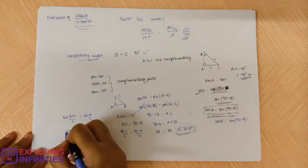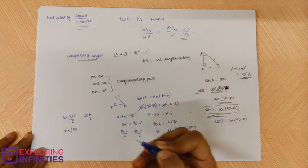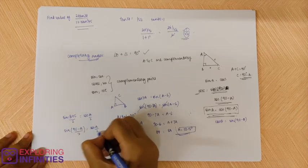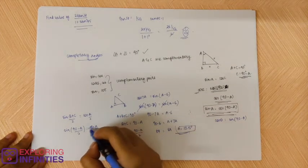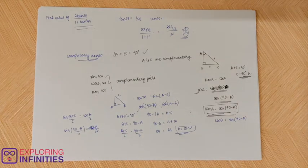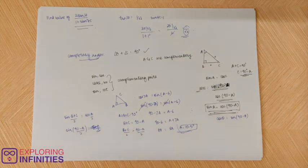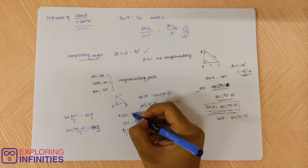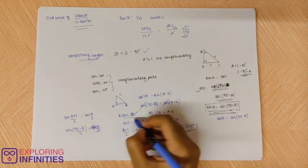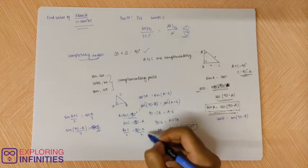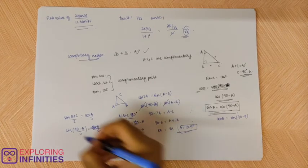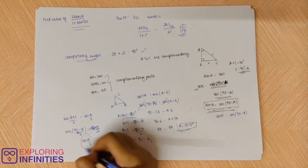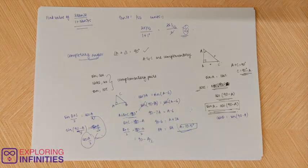So how do you write this? Sine of 90 minus a by 2 is equal to cos a by 2. You can write sin of 90 minus a by 2 like that. And now let's convert this to cos. This is 180 degrees, sum of angles is 180. So this is 180 by 2, so that is 90 minus a by 2. So sin 90 minus a by 2 is what? Cos a by 2. So clearly LHS is equal to RHS. That is how you solve questions.